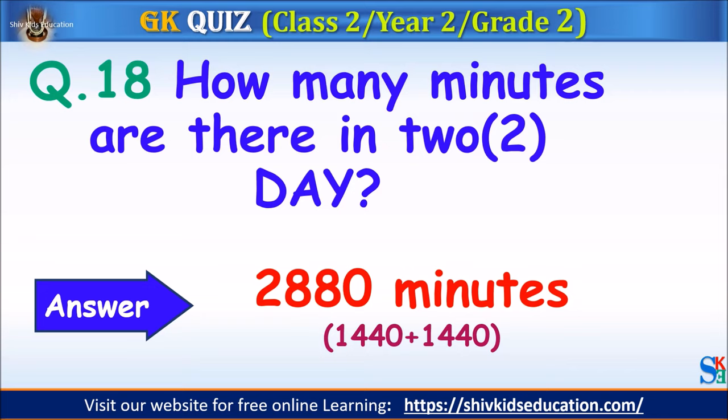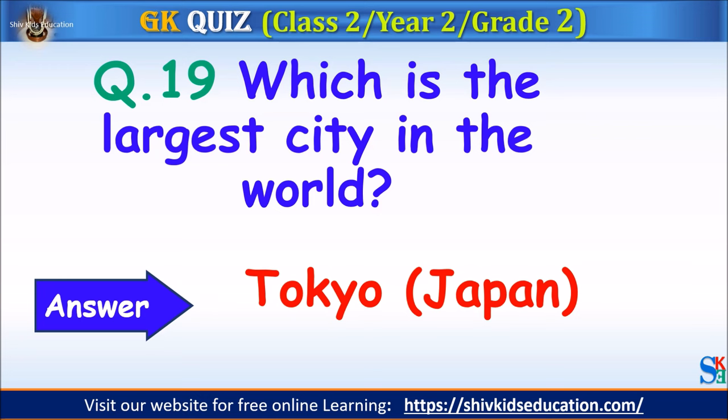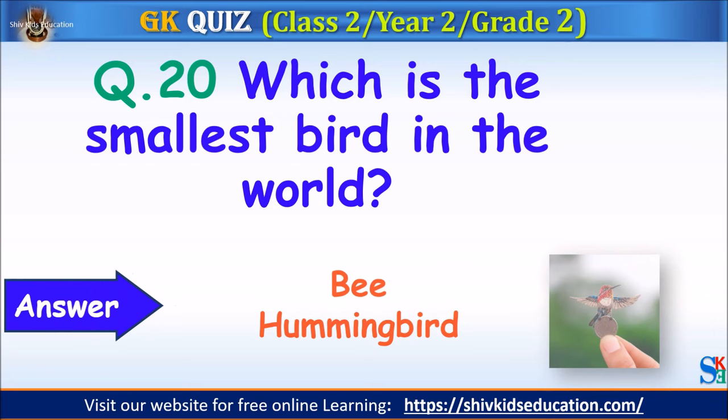Question 19: Which is the largest city in the world? Your time starts. The answer is Tokyo, Japan. Question 20: Which is the smallest bird in the world? Your time starts. The answer is the hummingbird.